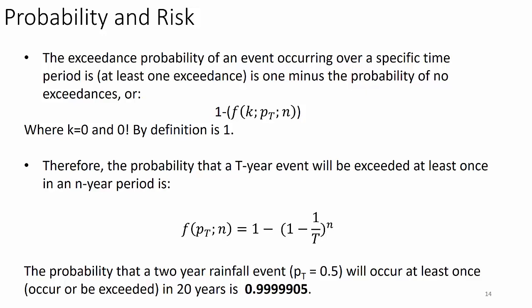Therefore, the probability that a T-year event will be exceeded at least once in an N-year period equals: f(P_T, N) = 1 minus (1 minus 1/T) to the N. Notice there are no factorials. For example, the probability that a two-year rainfall event (P_T = 0.5) will occur at least once in 20 years is 0.9999905 — almost certain. The probability that it will occur only once is incredibly rare. These are very different questions.